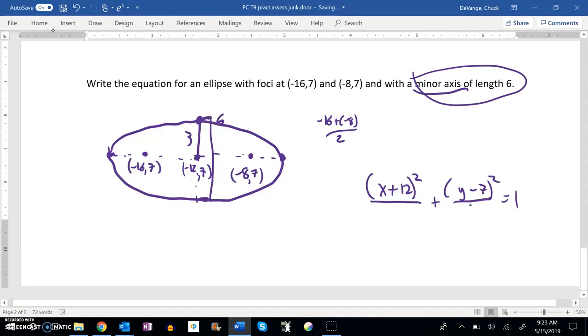Then I just got to get that a value. So let me think about that. Oh, you know what else I do know is I know this distance here for the foci, I know that that's a 4.